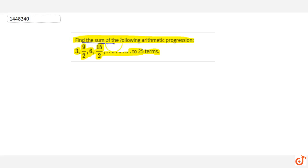We have a question: Find the sum of the following arithmetic progression. The AP is 3, 9 by 2, 6, 15 by 2, and so on, up to 25 terms. So we have to find the sum up to 25 times.